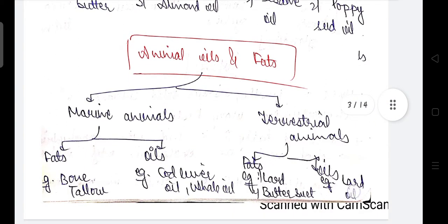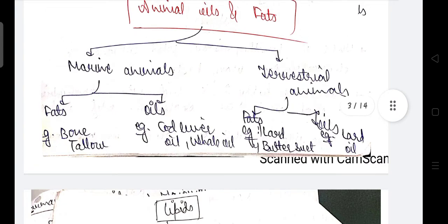Animal oils and fats are divided into marine animals and terrestrial animals. Marine animals may yield fats such as bone tallow, and oils such as cod liver oil and whale oil. Terrestrial animals may yield fats such as lard and butter, and oils such as lard oil.